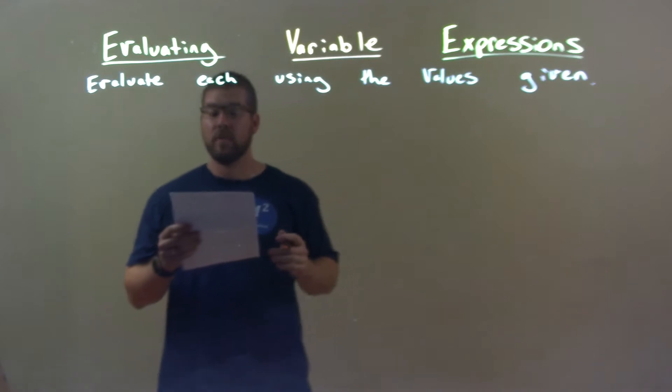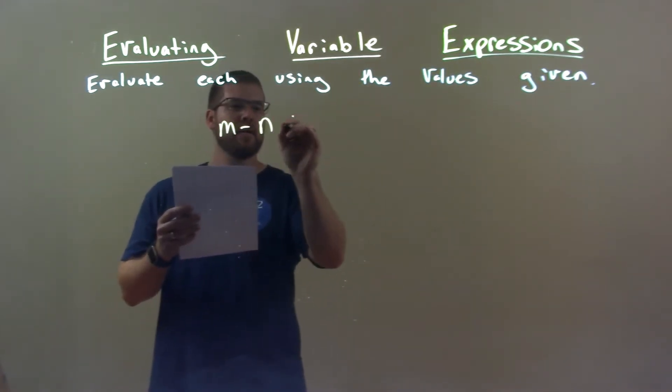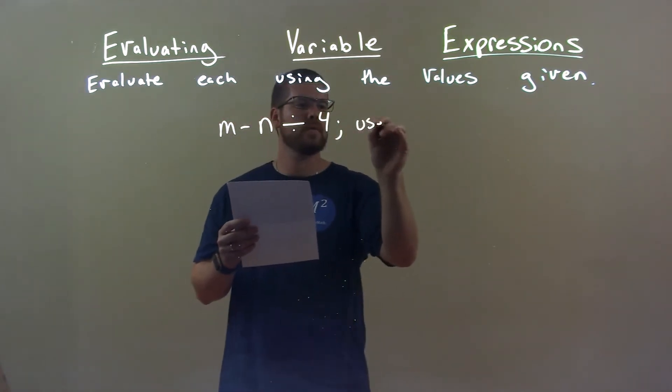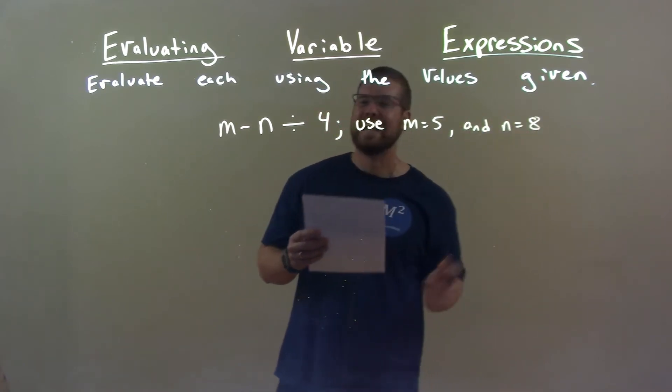So if I was given this expression m minus n divided by 4 and we need to use m equals 5 and n equals 8.